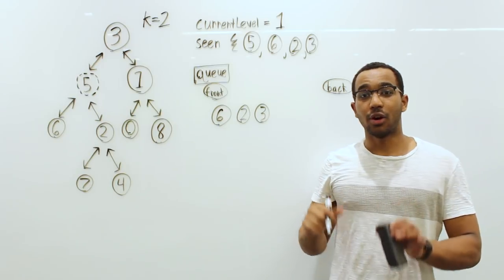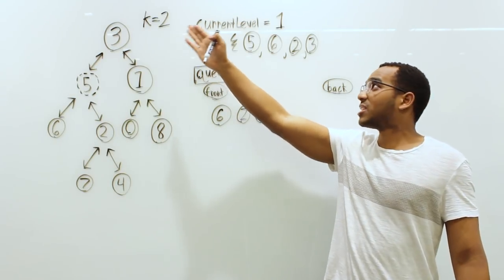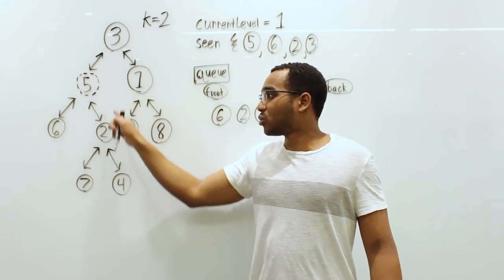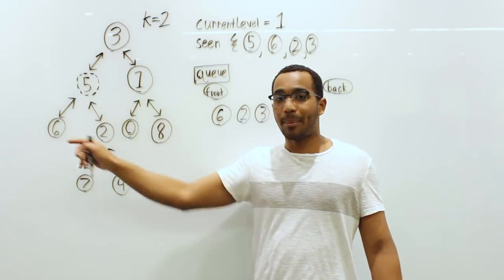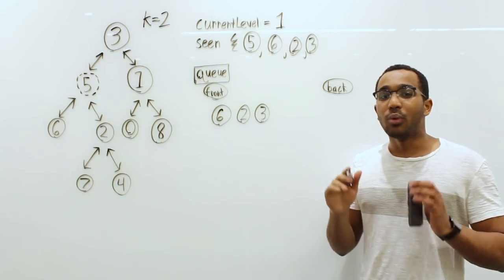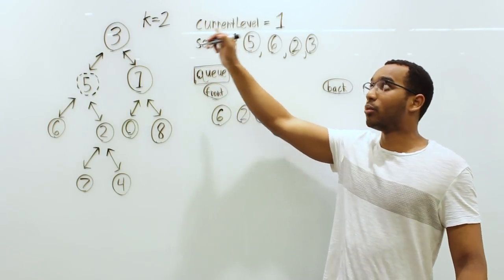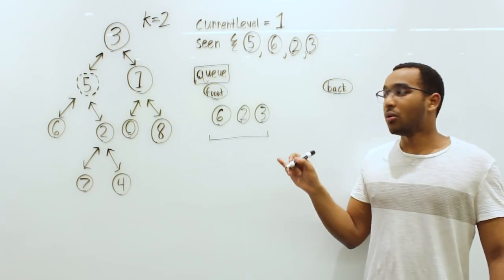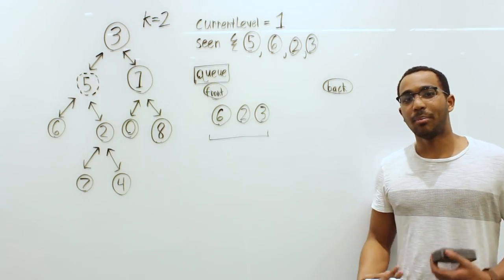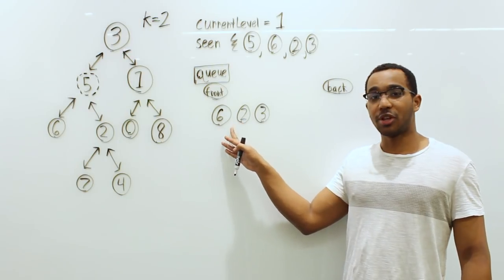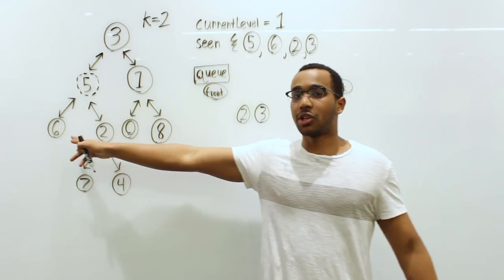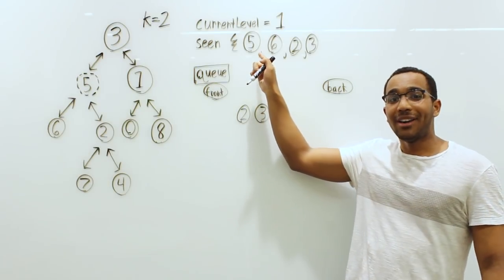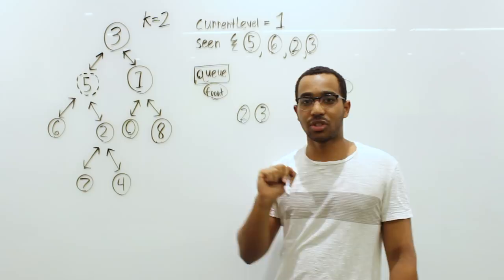If K was one, we would stop here — this is layer one: six, two, and three are all one hop out. But K is two, so we continue. We process three nodes. We pull six from the queue: six has no left child, no right child, and its parent five has already been seen, so we skip it. Then we pull two: add its left child seven, add its right child four, and its parent five has already been seen.